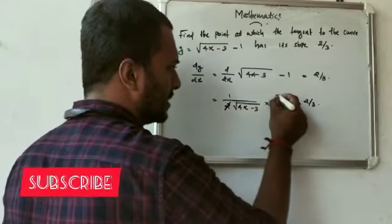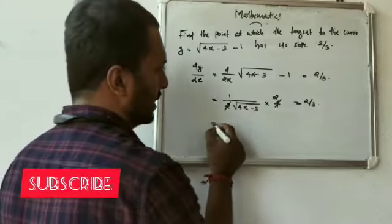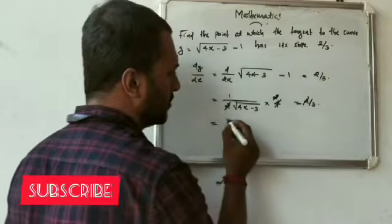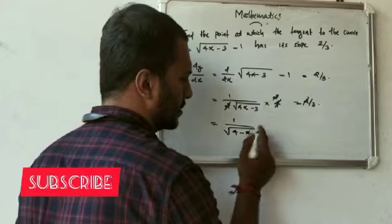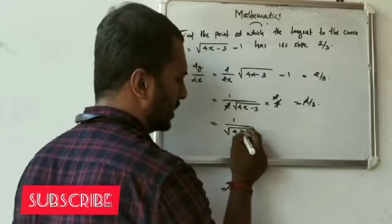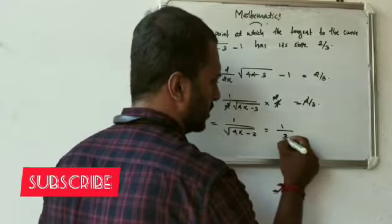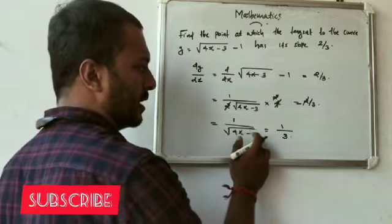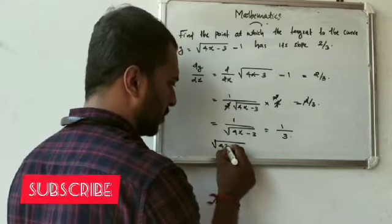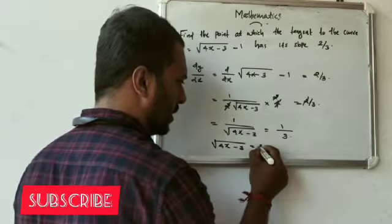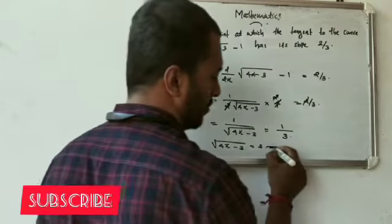2 and 4 cancel. That gives 1 by root of 4x minus 3 is equal to 1 by 3. Cross multiply: root of 4x minus 3 is equal to 3. Square both sides: 4x minus 3 is equal to 9.